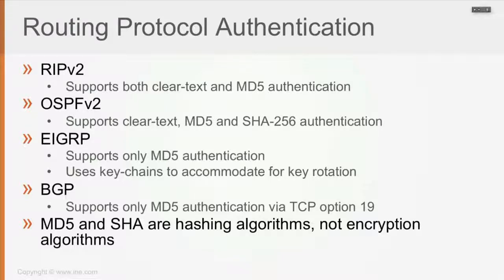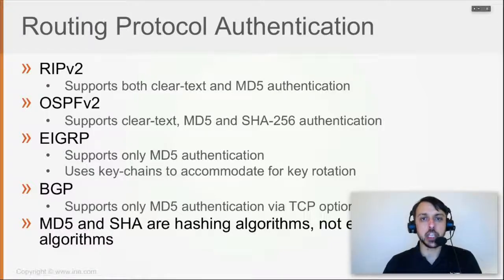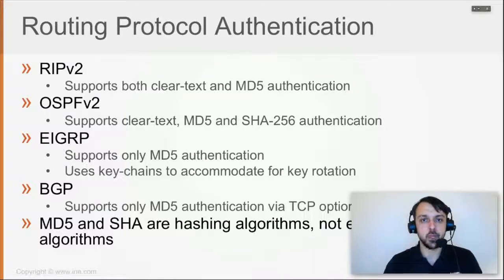It's important to remember — and we'll go into more detail in the cryptology section — that MD5 and SHA are not encryption algorithms; they are hashing algorithms. When you add authentication to a protocol using SHA or MD5, the packet — whether it's an EIGRP, OSPF, RIP, or BGP packet — is still a clear text packet. If somebody captures it, they will see what's in the packet.